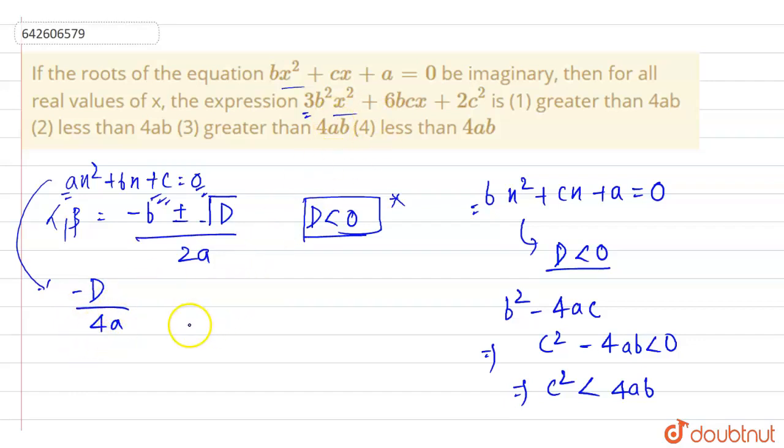So this equation we have as 3b square x square plus 6bcx plus 2c square and we have to find its minimum. Minimum can be given as this.